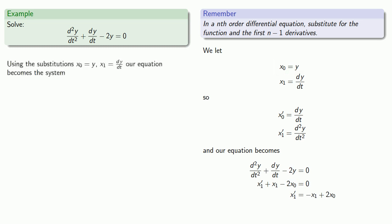Using the substitution x0 equals y, x1 equals dy/dt, our equation becomes the system where we have the derivatives of x0 and x1. Again, the general rule is we only want one derivative per equation. So x0 prime equals x1, and we already have an equation for x1 prime that only involves the single derivative.